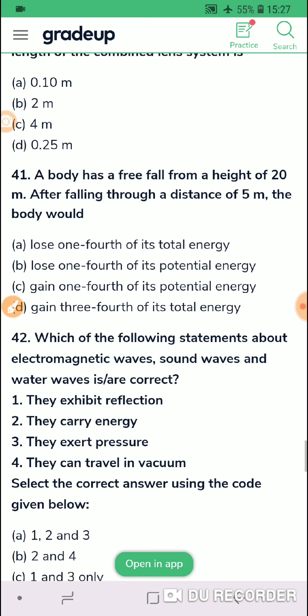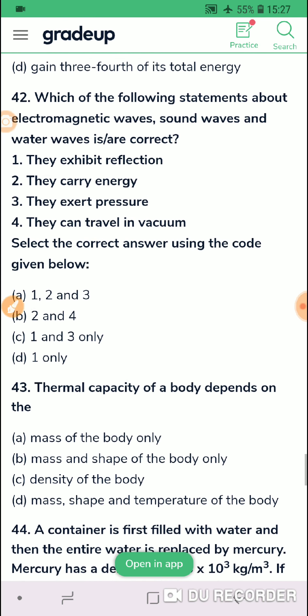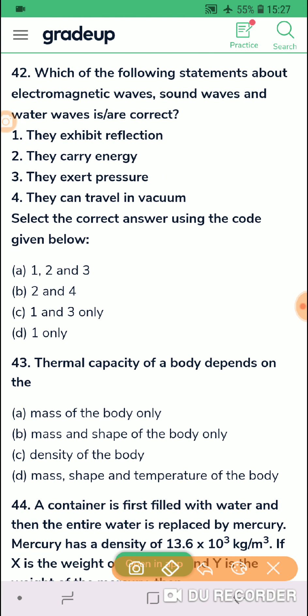Then let us check question 42. Which of the following statements about electromagnetic waves, sound waves and water waves is or are correct? Question 42, let us check. They exhibit reflection. That is correct. They carry energy. This is also correct. They exert pressure. This is also correct. They can travel in vacuum. No, no, no. The sound wave cannot travel in vacuum. So in my opinion one, two and three. These three statements are correct. So first option you go for it. One, two, three.